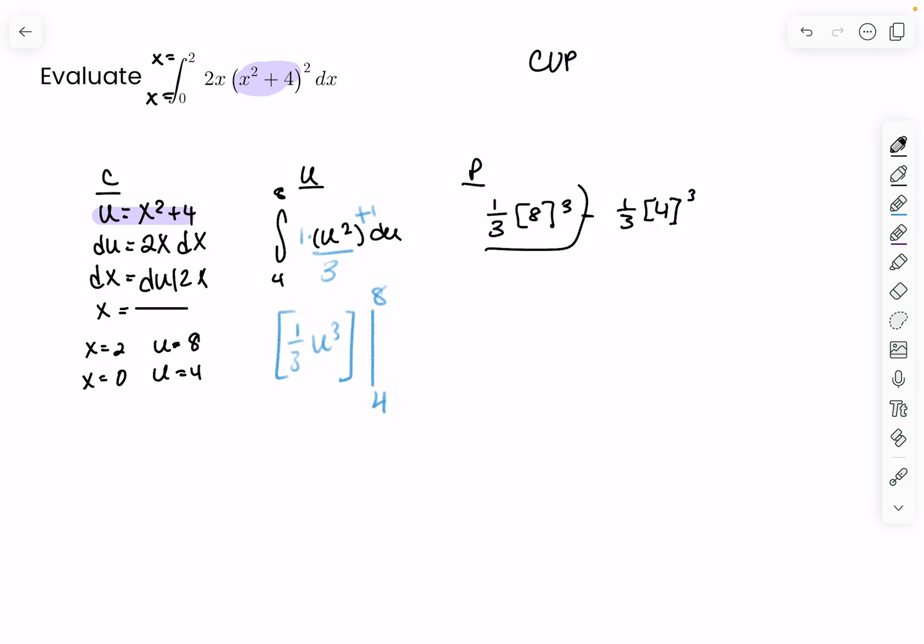Alright, and so this over here becomes 512 over 3. This over here becomes 64 over 3, because you have the same denominators, you just subtract the numerators, and you get 448 over 3. And that is your answer to this integral, this definite integral right here.